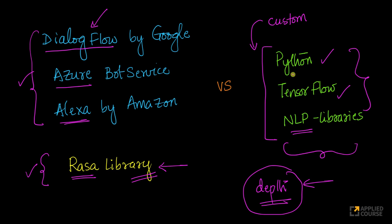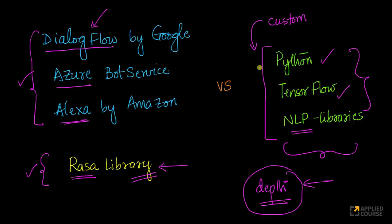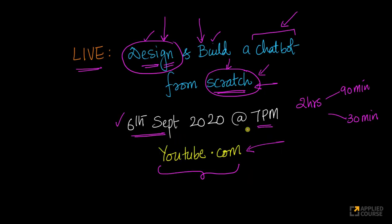What we will do in this live session is first discuss various types of chatbots that we can build from scratch, because we have complete flexibility. We will discuss a few design choices, then pick one concrete problem and try to solve it and build everything using Python, TensorFlow, and NLP libraries from scratch. This will help us appreciate what happens under the hood — whether it is Dialogflow, Alexa, Azure, Rasa, or any of these libraries or tools. See you this coming Sunday at 7pm on our YouTube channel.